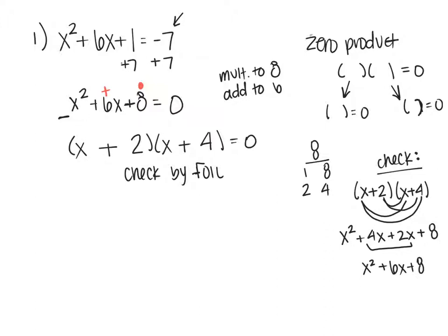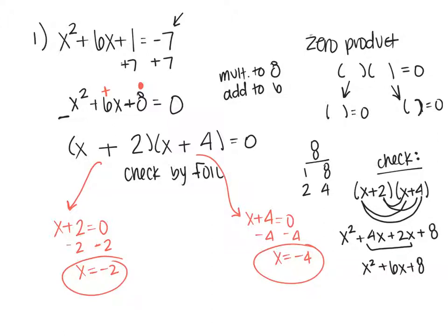Now I'm going to use the zero product property, which says take each piece and set it equal to zero and solve. x plus 2 equals 0, subtract 2, get x equals negative 2. x plus 4 equals 0, subtract 4, x equals negative 4. So I have two solutions: x equals negative 2 and x equals negative 4. In Hawkes, you would put those two with a comma between them.